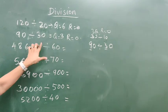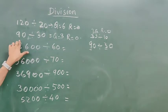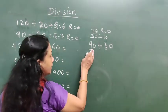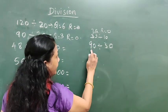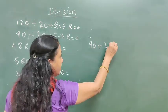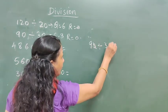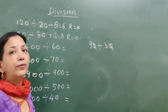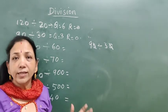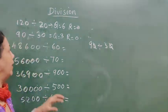Is it clear? So here, which number are we dividing? See, 90 divided by 30 — here there is one 0 in 90, here one 0 in 30. Remove that one 0 from both. Then 9 divided by 3 gives 3. Is it clear?